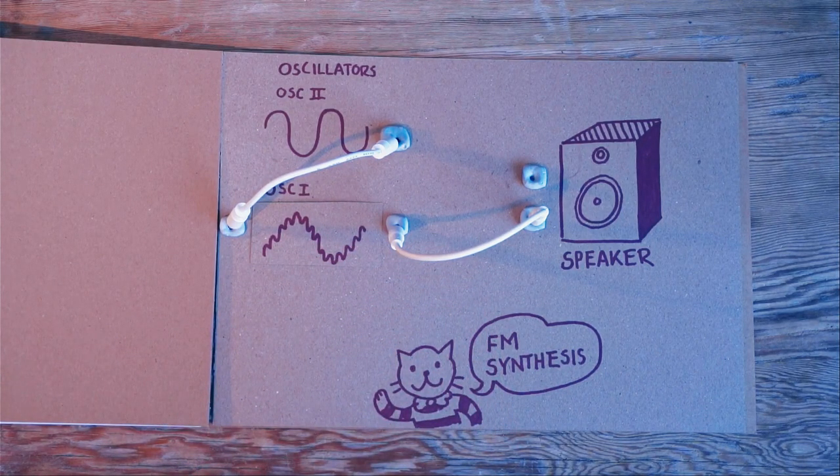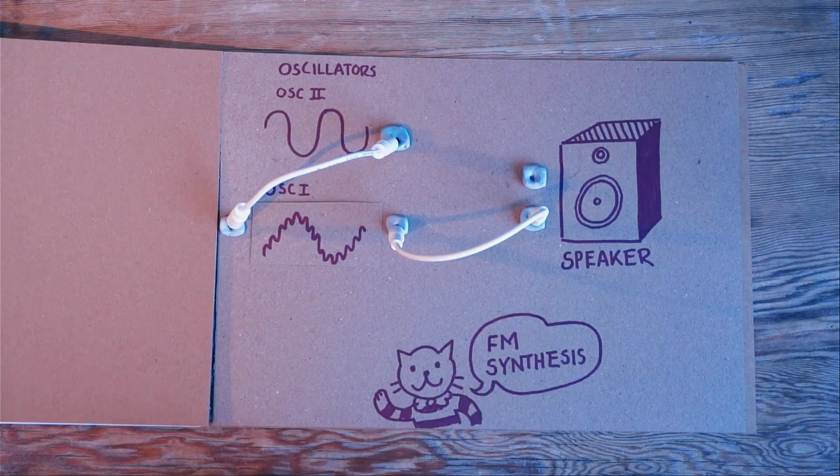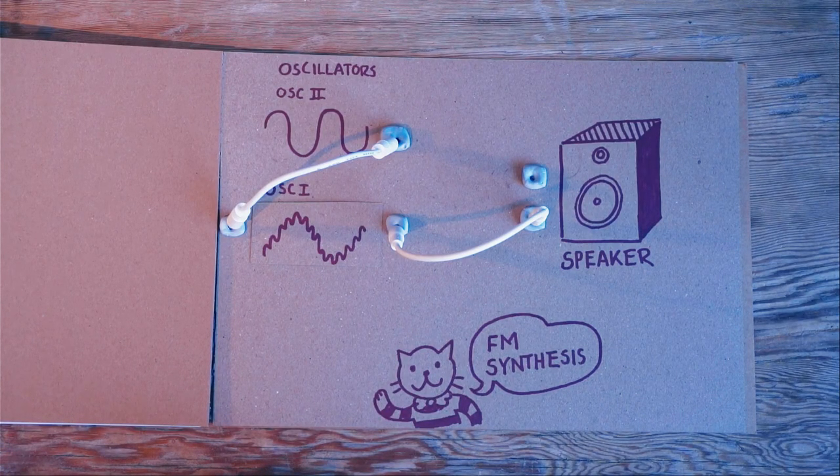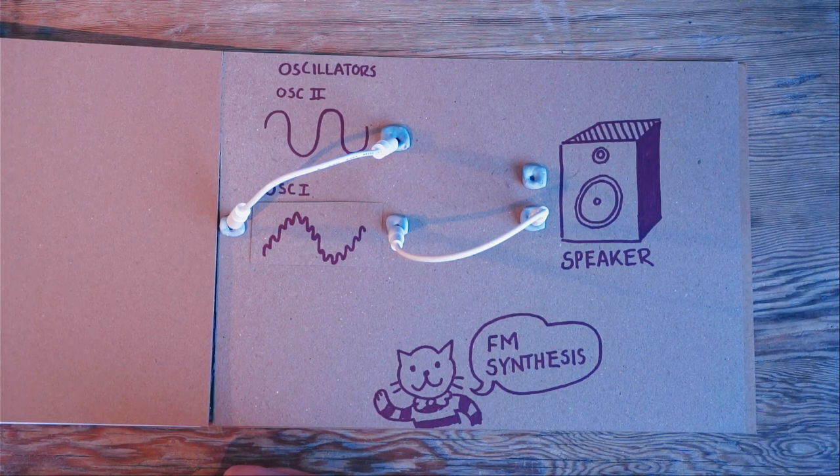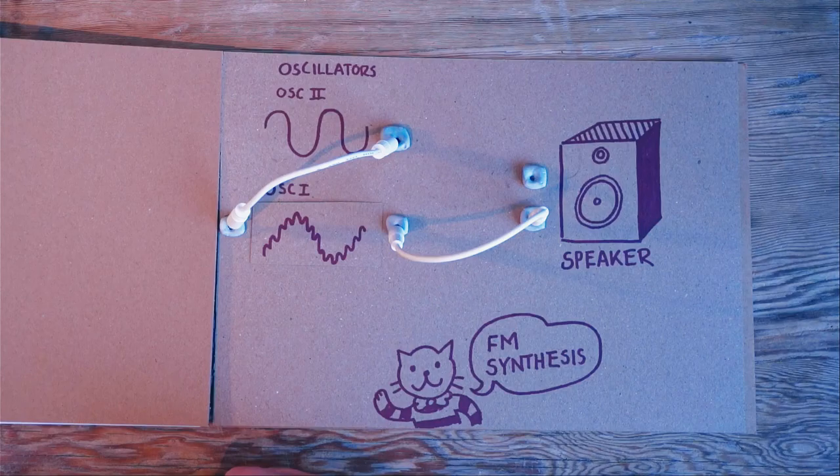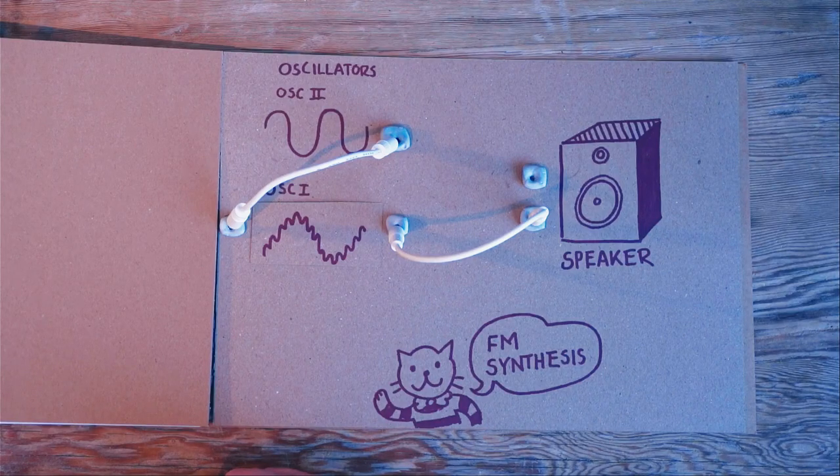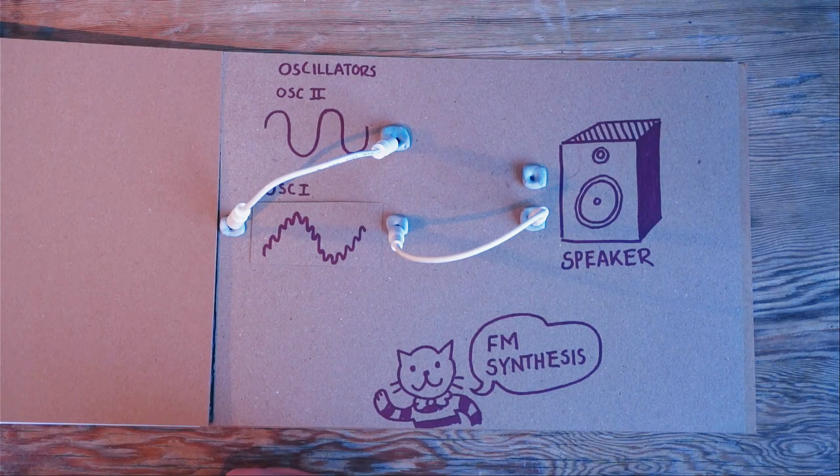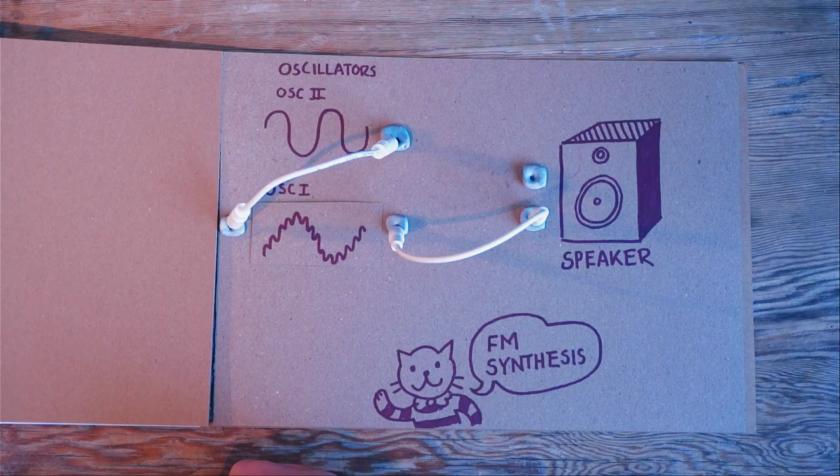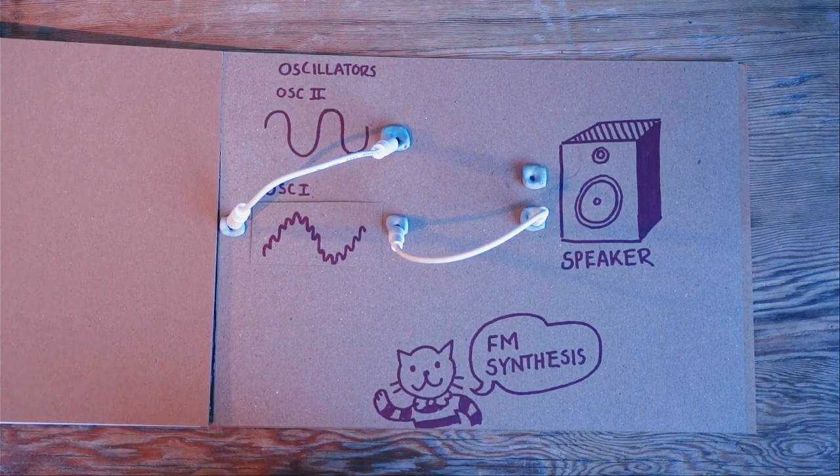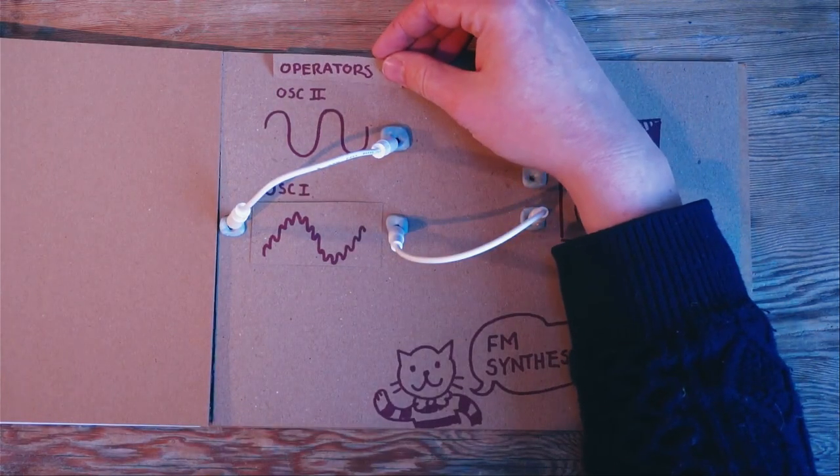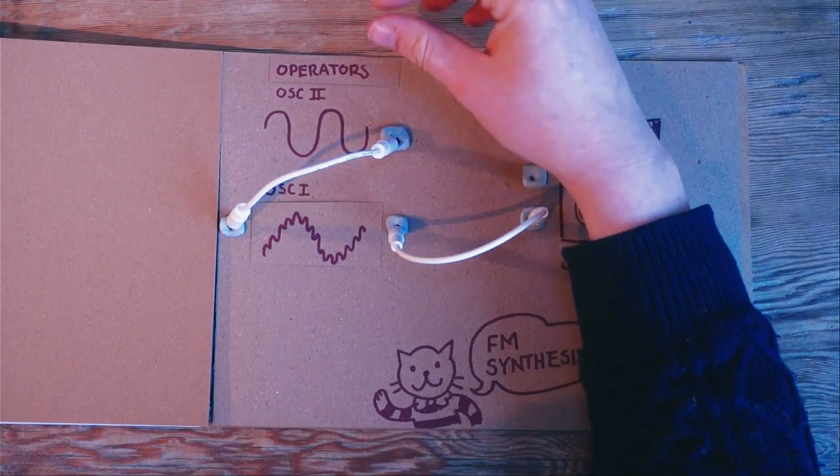These drawings are not scientific by the way, but it gives you an idea that there are lots more wibbly wobblies in there, and that creates a lot more upper harmonics. And that's why we get this sort of sound. That is frequency modulation. Good to know is that these oscillators are not referred to as oscillator often in FM synthesis. They're called operators instead.